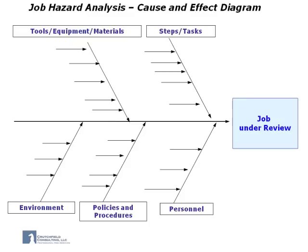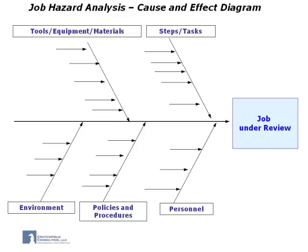It does look like a fishbone, hence its name. It can be used with a JHA to bring together all the elements or causes of a job, the job being the effect. To develop a cause and effect diagram, we would first begin with defining the task or step to be taken under review. This becomes essentially the head of the fish. We then draw the backbone of the fish and begin the analysis of the tasks or steps within the job.